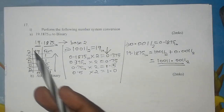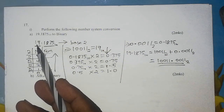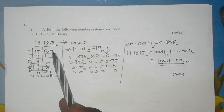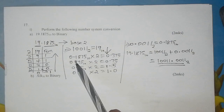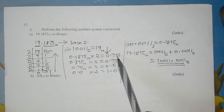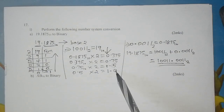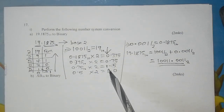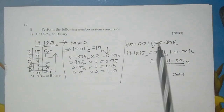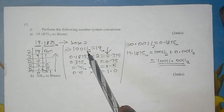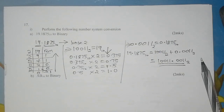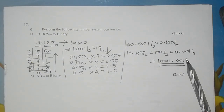I hope you followed the steps. First, work out the equivalent for the whole number by dividing by 2 repeatedly until the quotient is 0, and then read your remainders backwards. Second, work out the fraction part by multiplying it by 2 repeatedly until the fraction part of your products becomes 0. Then read your whole numbers from your products going downwards, beginning with 0. And lastly, combine the equivalent of the whole number and the equivalent of the fraction to arrive at your final answer.